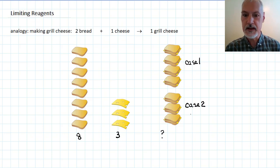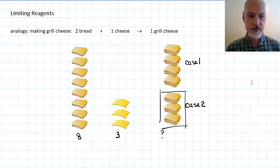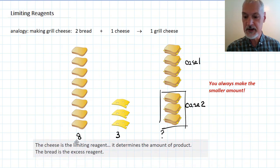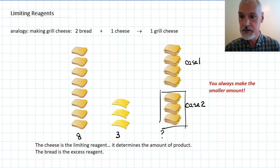Well how many grilled cheese do you make? You would only be capable of making the three grilled cheese sandwiches. That's generally the rule: you can only make the smaller of the two amounts. So we would identify in this case the substance that limited how much product we could make was the cheese, the limiting chemical, and the bread would be considered the excess reagent.